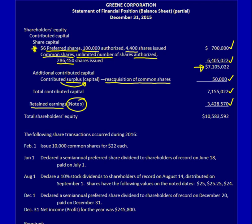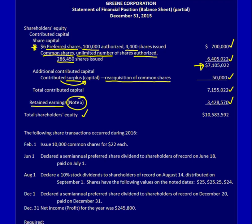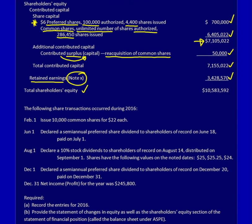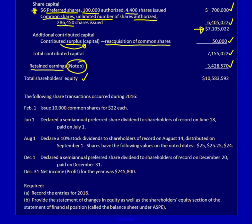That gives me my total shareholders equity. A number of things occurred in this company during 2016, so let's go through them quickly. February 1st, we issued an additional 10,000 common shares for $22 each. On June 1st, I declared a semi-annual preferred share dividend — shareholders of record are on June 18th, and then it was paid on July 1st.